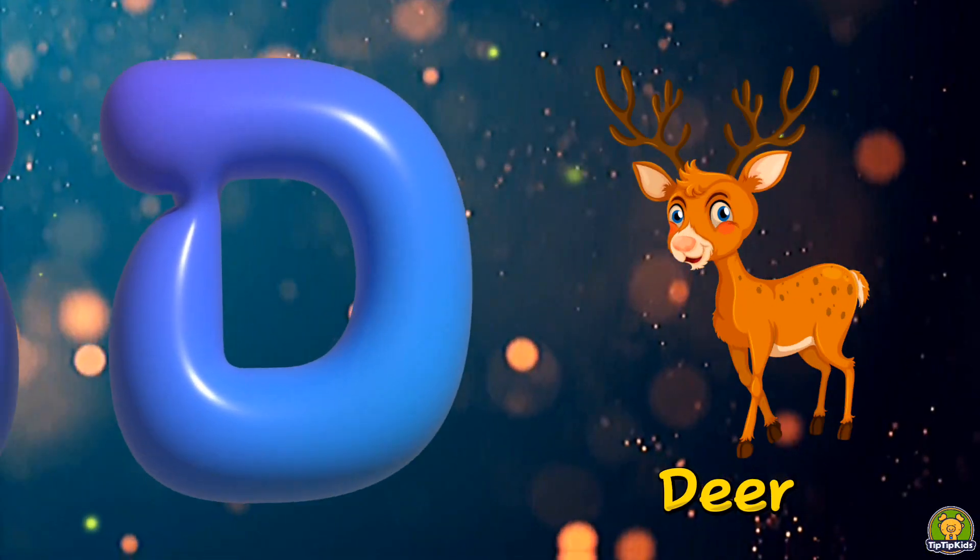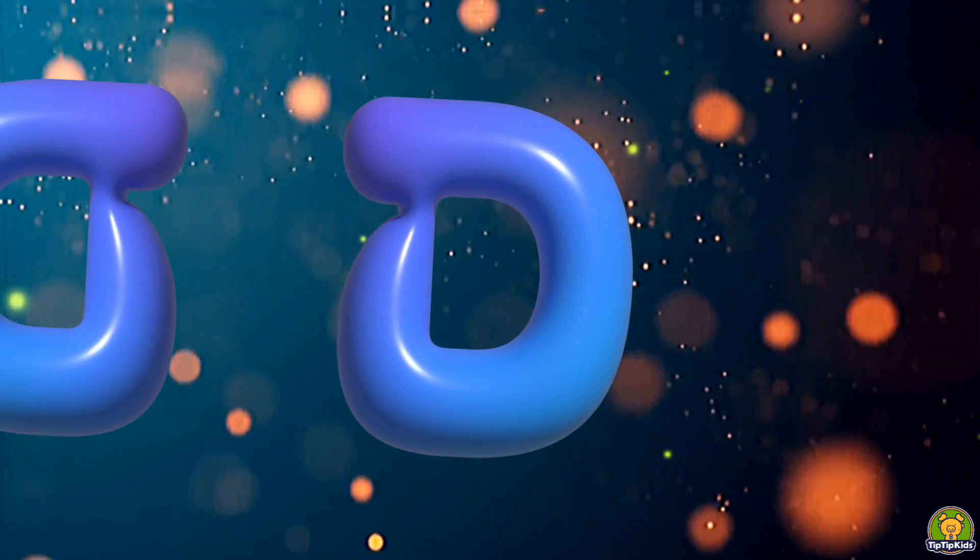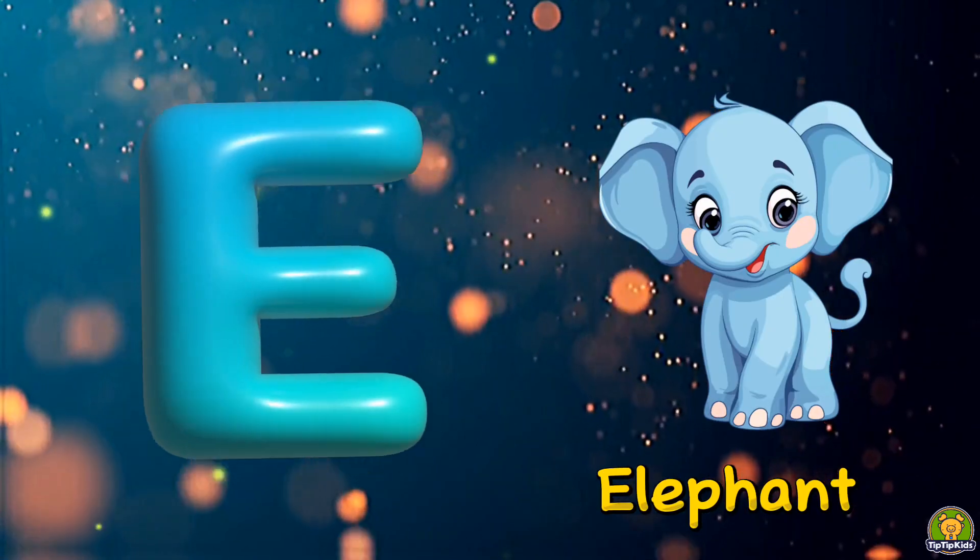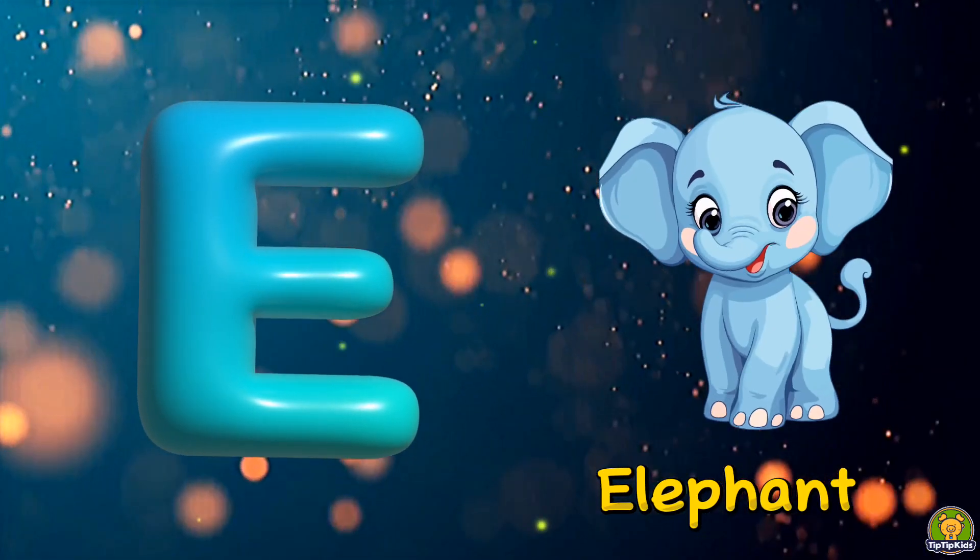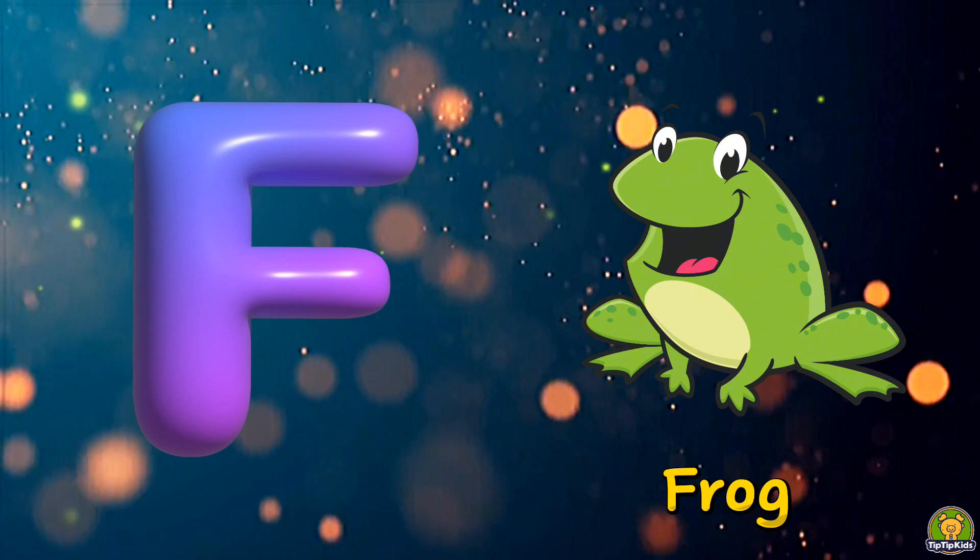D is for deer, d-d-deer, d-deer. E is for elephant, e-e-elephant, e-elephant. F is for frog, f-f-frog, f-frog.